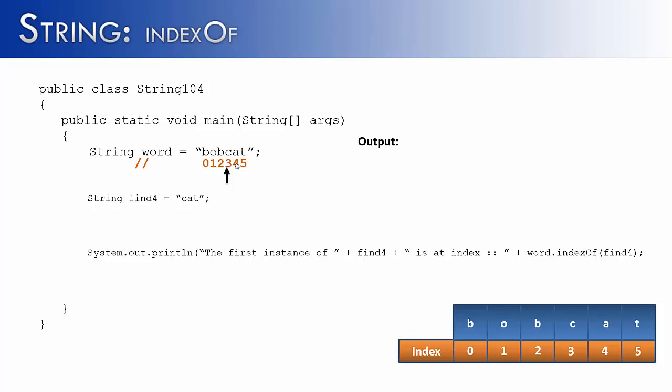Now is it going to return something like 3 through 5 or anything like that? No, it's just going to return where the first letter of the string that you're searching for is located. And so this would say the first instance of cat is at index 3.